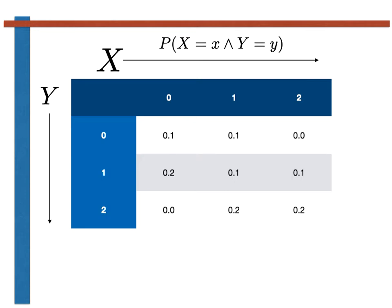The headers for the columns in this table are the various values the random variable X can take, while the headers for the rows are the various values the random variable Y can take. The body of the table holds the values from the joint probability mass function, i.e. the probabilities that X equals the value in the column header and Y equals the value in the row header. Notice that if all the probabilities in the table are added together we get one. We can thus sample from the joint distribution using an algorithm similar to those used to sample single random variables.